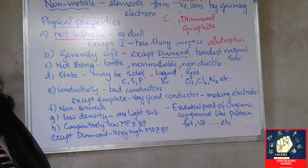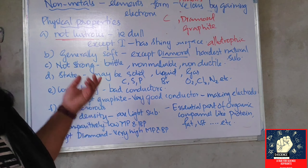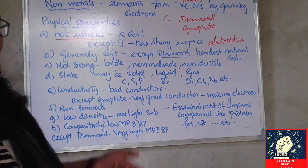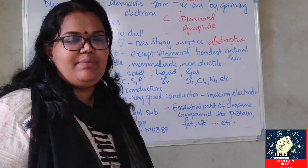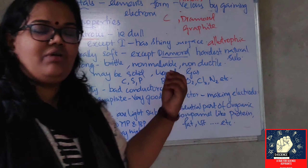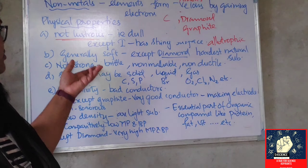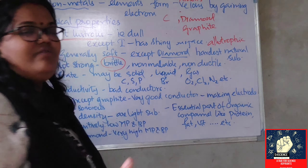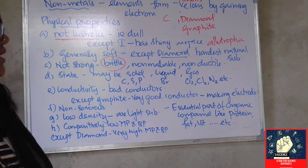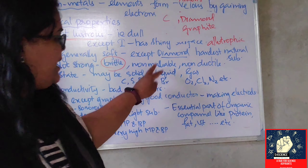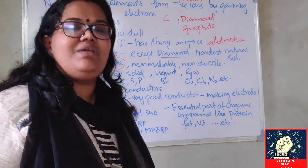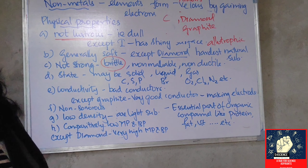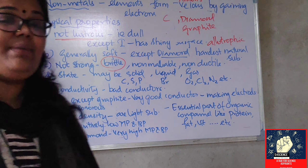What about strength? Nonmetals are not at all strong. They are not malleable — you cannot make them into thin sheets. They are not ductile — you cannot make them into thin wires. So we can say that nonmetals are easily breakable, or brittle. They are non-malleable and non-ductile.